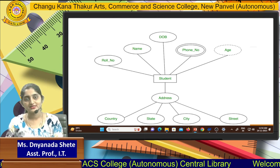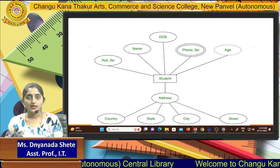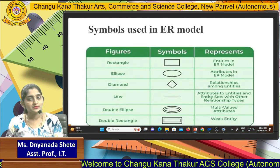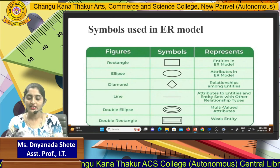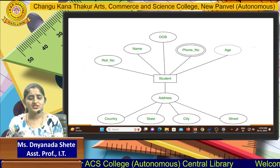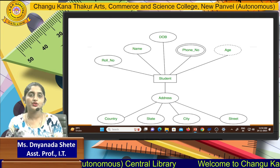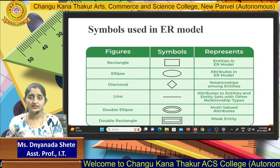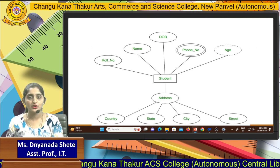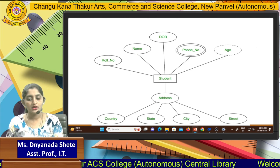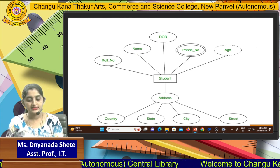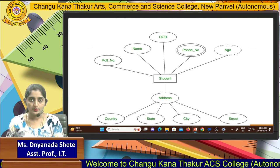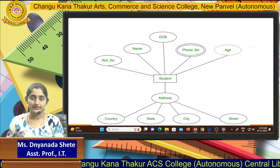Here is an example of an ER diagram — a Student Management System ER model diagram. Here I am taking entities and attributes. The entity symbol is a rectangle, which always represents the entity in ER model. The main entity here is Student. The ellipse represents attributes — attributes like roll number, name, date of birth, phone numbers, country, state, city, and street address.